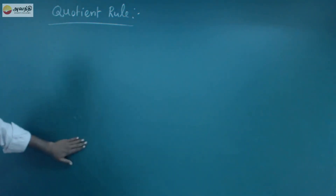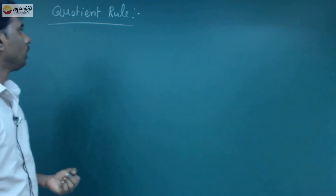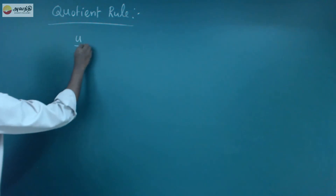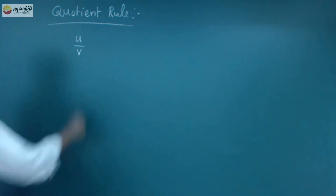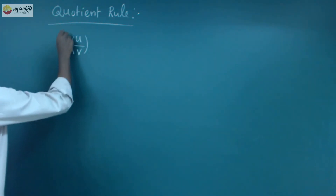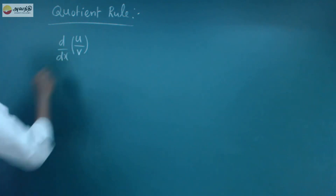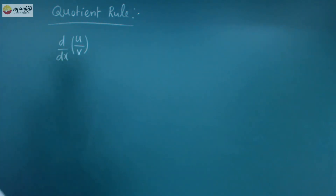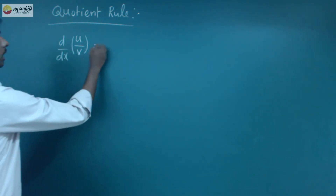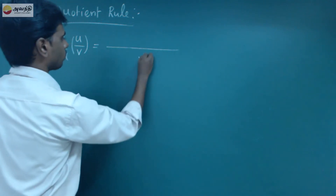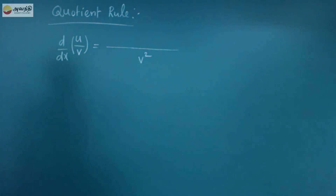Next, the quotient rule. If we have two functions in a product, we will see how to find differentials. Now, quotient means u divided by v — this is a function. This is how we differentiate. So, u by v is in quotient form.